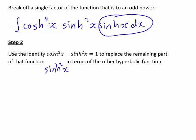We want to replace that in terms of the other hyperbolic function, which in this case is cosh(x). So using our identity, cosh²(x) minus sinh²(x) equals 1.